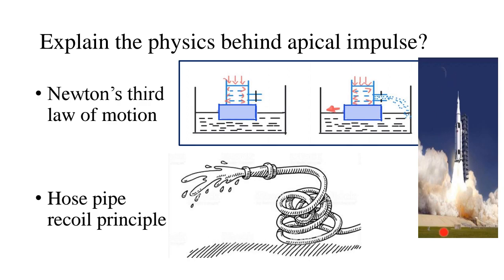The same law applies to rocket science: as pressure escapes from the bottom of the combustion chamber, the upward forces on the rocket are no longer balanced by equal opposing downward forces, so the rocket moves upwards. Another principle is the hose pipe recoil principle. When a coiled garden hose pipe has sudden ejection of fluid under high pressure, the pipe tends to straighten out. We'll use this principle to understand how the aorta — the ascending and descending aorta — behaves under the pressure of early systole.